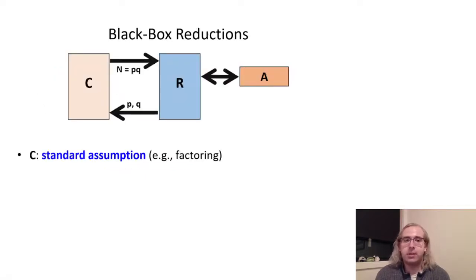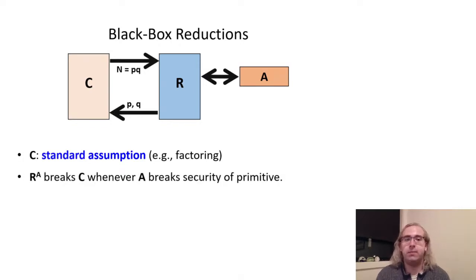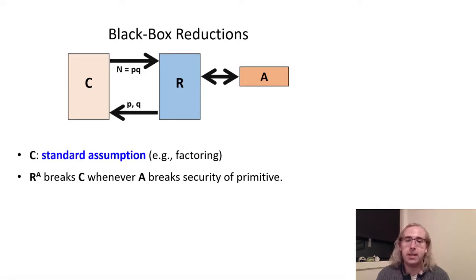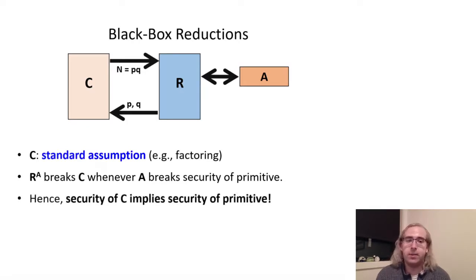Consider some black box reduction R from a primitive, such as our notion of adaptively multi-user secure MACs, to some standard assumption C. Security of the primitive follows from the assertion that, whenever there exists an adversary A that breaks the security of the primitive, the reduction R can use A as a black box to efficiently break the standard assumption C. And so, by contrapositive, security of C implies that no such adversary may exist.